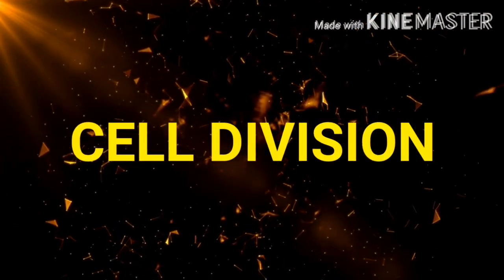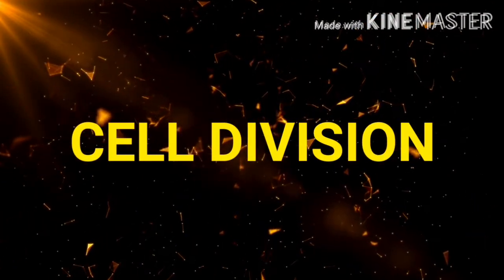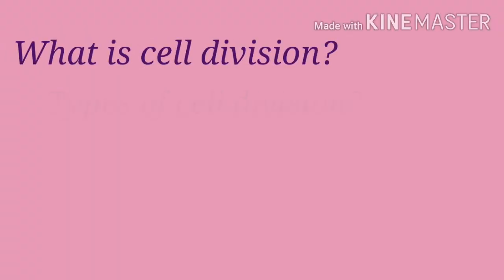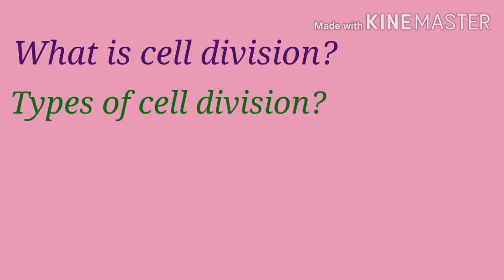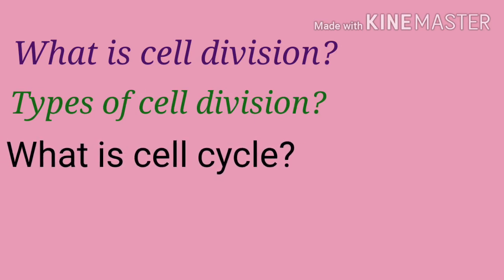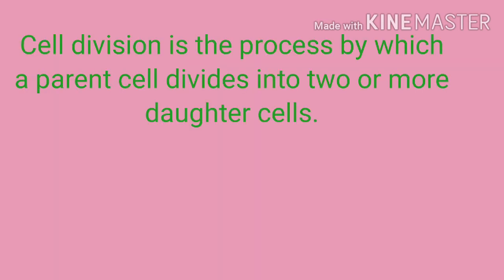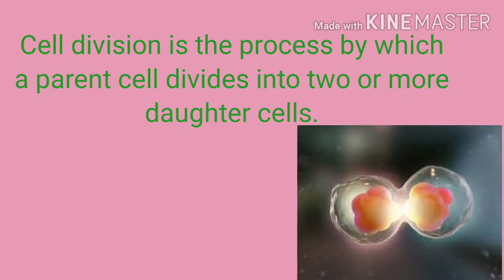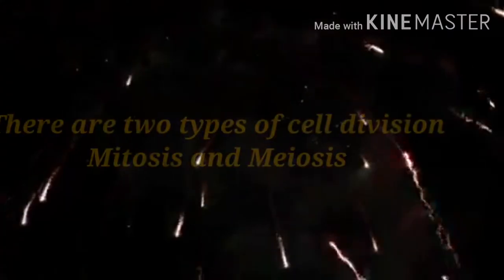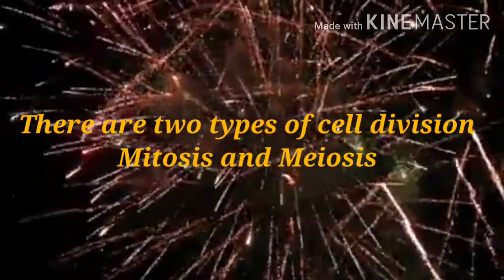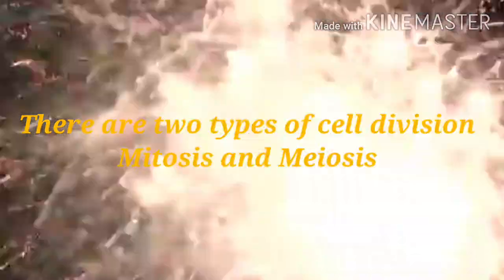In this video we are going to learn about the basic concepts of cell division: what is cell division, types of cell division, and what is the cell cycle. Cell division is the process by which a parent cell divides into two or more daughter cells. There are two types of cell division: one is mitosis and another one is meiosis.